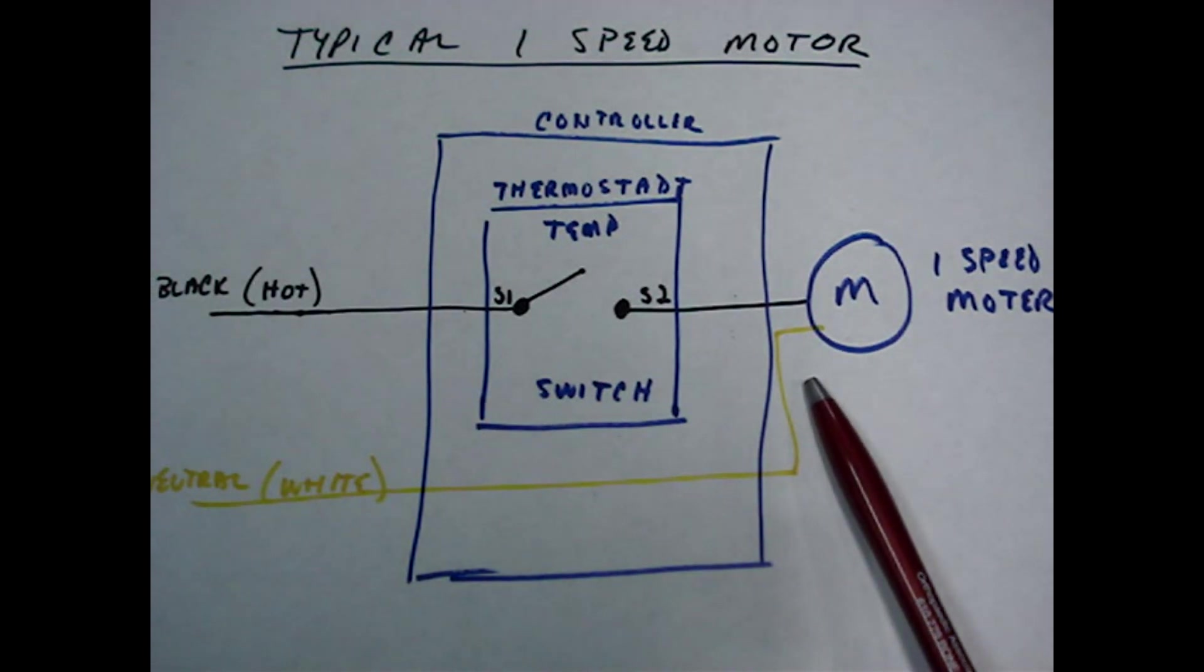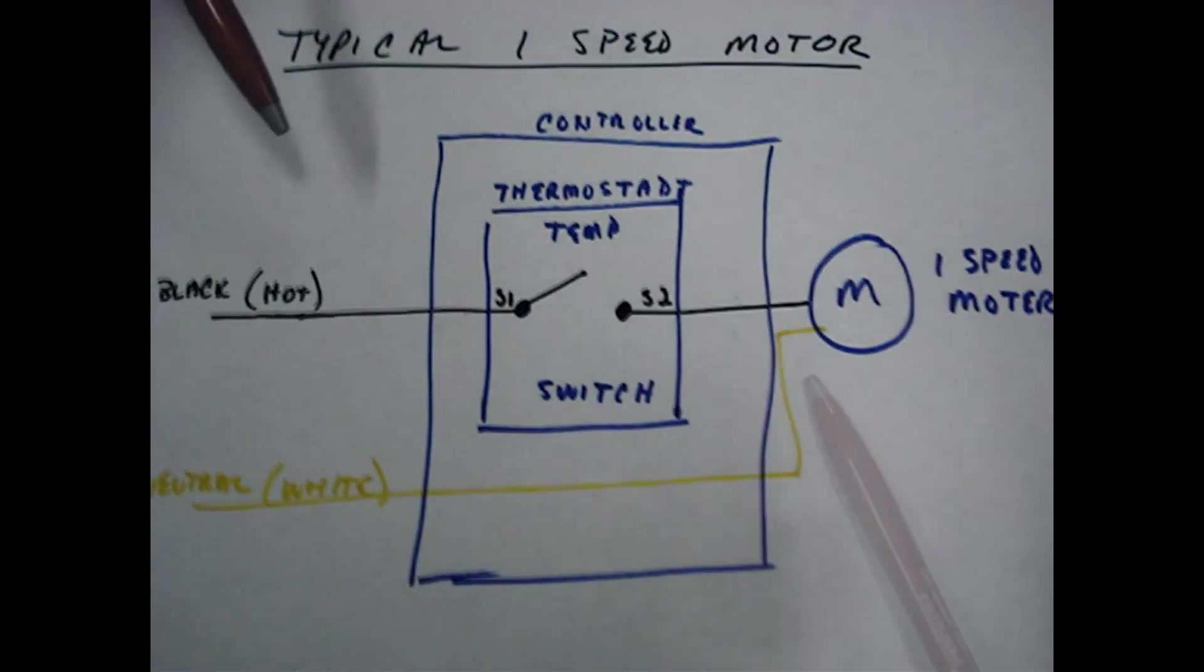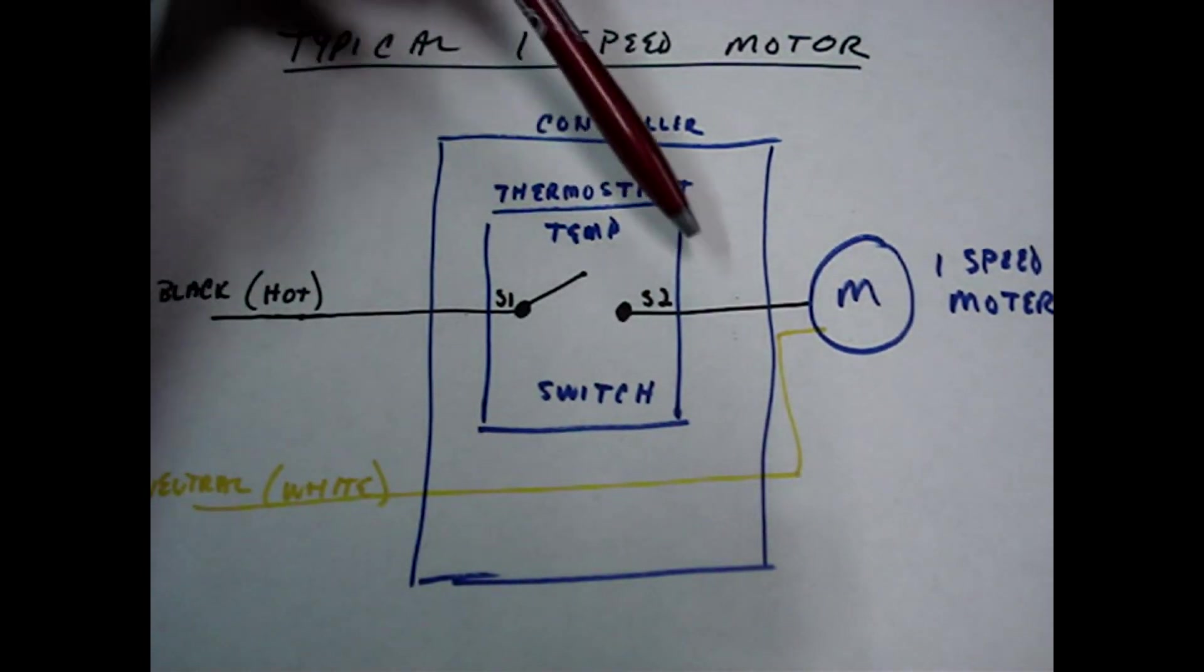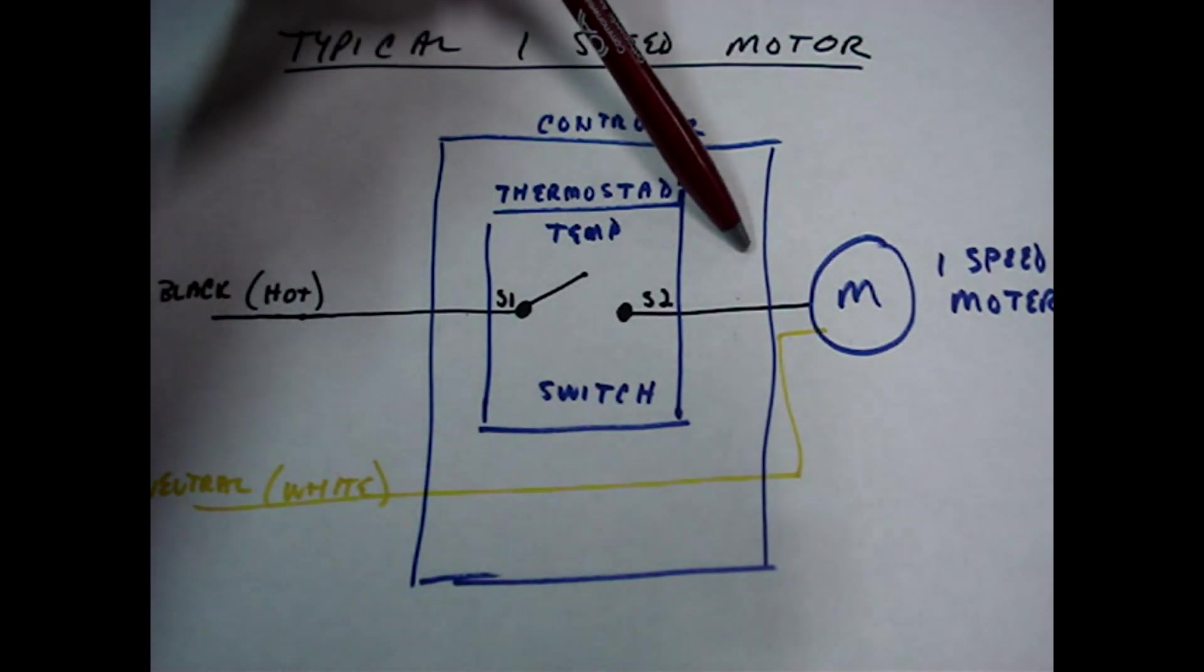The neutral wire goes to the fan motor. When the switch closes, it sends the hot to the other side of the motor winding.